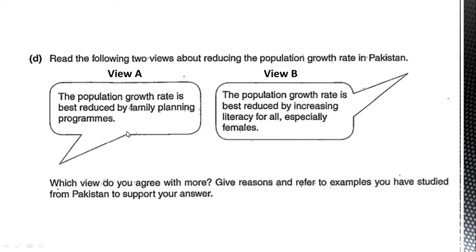Method two is easier, and the one I always recommend my students to use. In this method, you argue for one view and against the other. If you are giving points in favor of View A, explain them and give examples. Then give points against View B, develop them, explain them, and give examples. You need to provide points for both View A and View B, along with explanations. But the better option is to choose either View A or View B to support and agree with. If you agree with View B, give points in its favor, explain them, give examples, then write points against View A, explain them, and give examples or quotes.